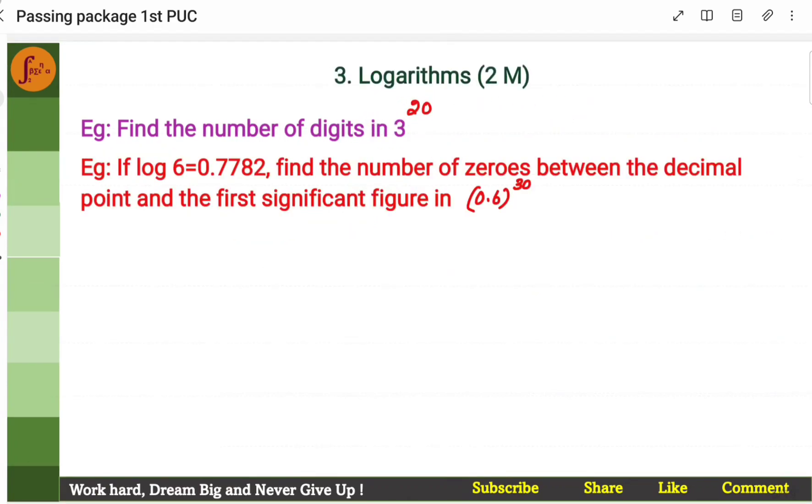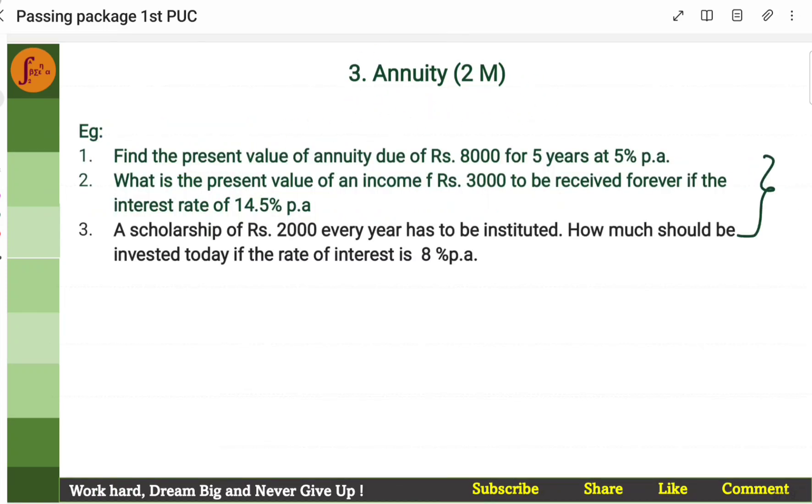Now, logarithms. This is a 2 marker question here. We will have to find the number of digits in the integral part of this particular number, 3 to the power 20. Similarly, we will have to find the number of zeros between decimal and the first significant figure. So again, this is just examples, but you can look at all 2 marker problems in logarithmic chapter and prepare them. Another 2 marker would be annuity. Annuity would be straightforward questions. You will have to find the present value of annuity given the amount and time frame and rate of interest.